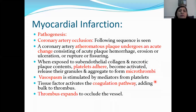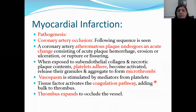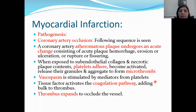In coronary artery occlusion, an atheromatous plaque undergoes acute changes consisting of hemorrhage, erosion, ulceration, or rupture/fissuring. When exposed to sub-endothelial collagen and necrotic plaque contents, platelets adhere, become activated, release their granules, and aggregate to form microthrombi. Vascular spasm is stimulated by mediators from platelets, and tissue factors activate the coagulation pathway, adding bulk to the thrombus until it completely occludes the vessel.